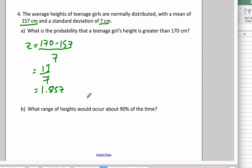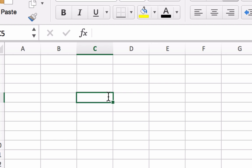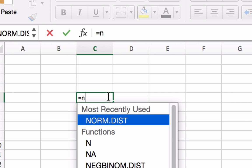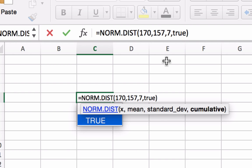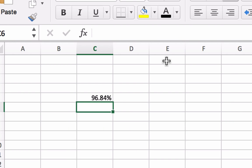If we go to Excel, we can do this calculation by doing equals NORM.DIST. And our value was 170, the mean was 157, standard deviation was 7, and we put in true. What this means is that this data value is in the 96.8 percentile.